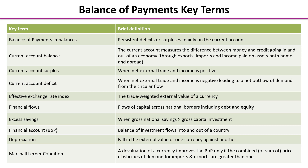We've got some key terms here to do with the balance of payments. Just a couple to comment on: the effective exchange rate — we talked about this in previous video series — this is a weighted average of one country's currency against others, expressed as an index. And right at the bottom, the Marshall-Lerner conditions. These are really important because they give us a rule for when a currency's depreciation will improve its current account.